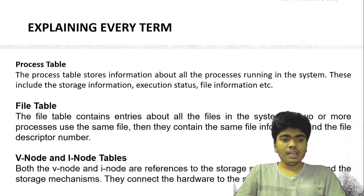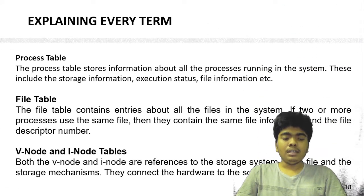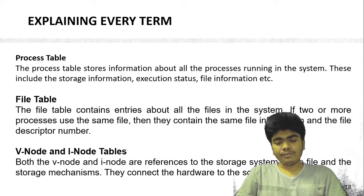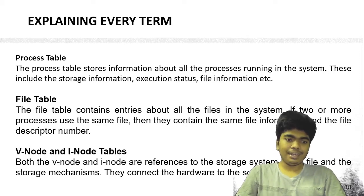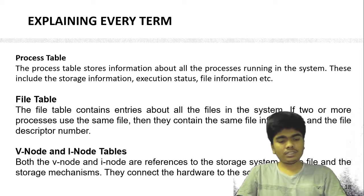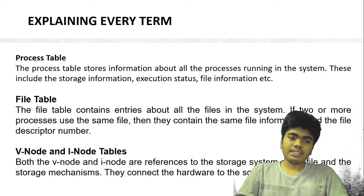Let's go into each one in depth. The process table stores information about all the processes running in the system. This includes storage information, execution status, file information, etc.